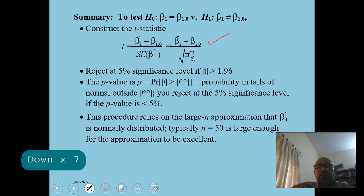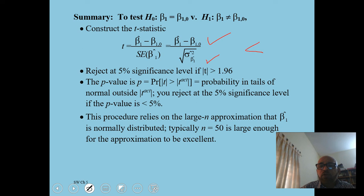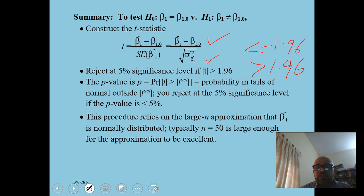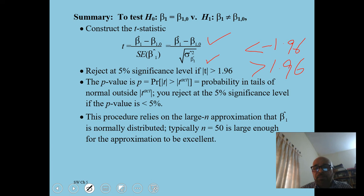For large samples, if the absolute value of t is less than minus 1.96 or greater than 1.96, we reject the null hypothesis. The p-value: if p-value is less than 0.05, we reject the null hypothesis; if greater than 0.05, we fail to reject at the five percent level of significance. Note that the p-value is not the probability of rejecting H-naught, nor the probability of making a Type I error — be careful in interpreting it correctly.